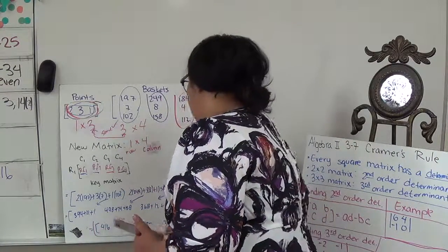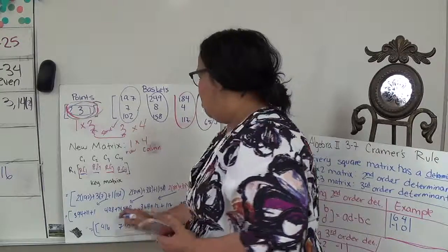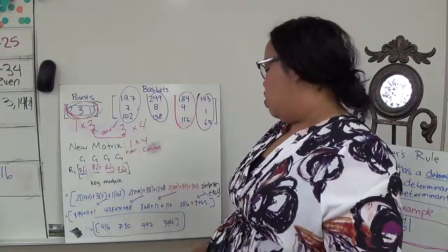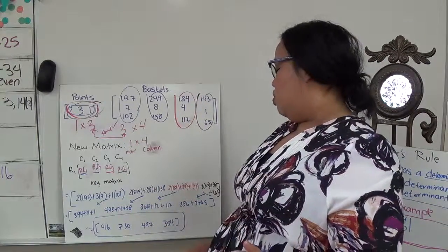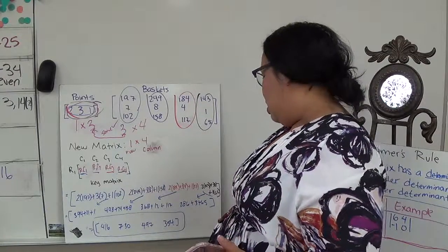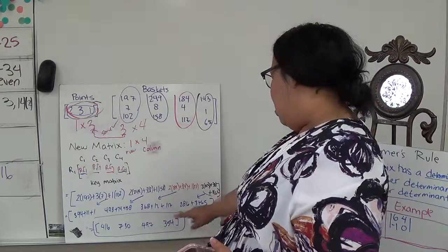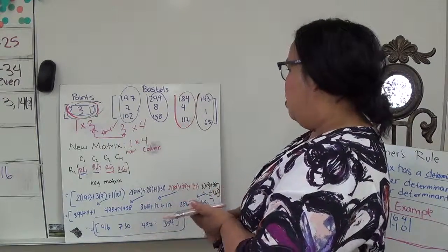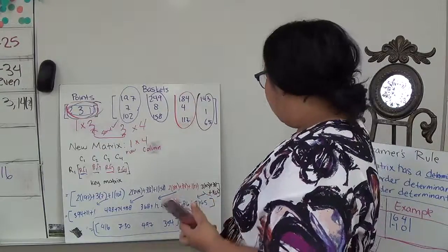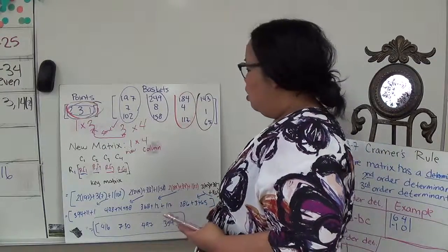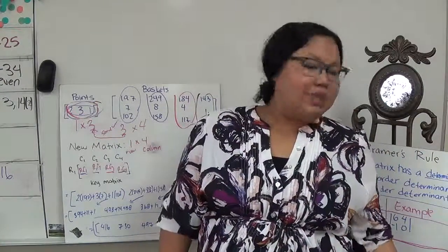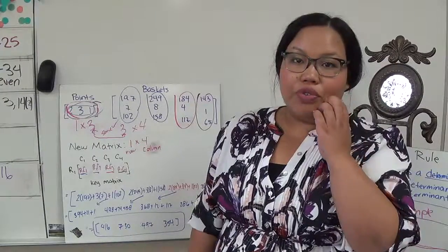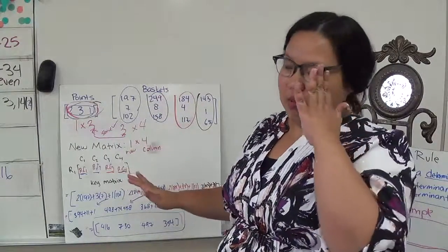So this is my answer. That means in 2005 this player scored 416 points, in 2006 they scored 730, in 2008 they scored 497, and in 2009 they scored 354. Hopefully that makes some sense. We're going to do one more example, so pause this and write it down.